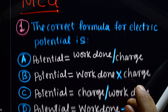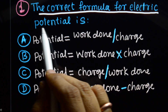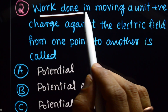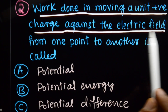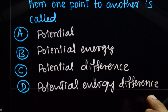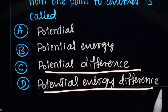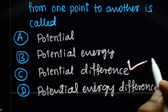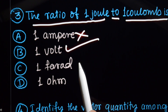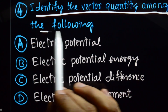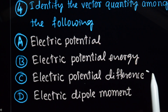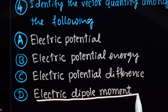Now MCQs. The correct formula for electric potential is: potential equals work done divided by charge. Work done in moving a unit positive charge against the electric field from one point to another is called potential difference. The ratio of 1 joule to 1 coulomb is 1 volt. Among the following, identify the vector quantity: electric potential, electric potential energy, and electric potential difference are all scalar. The electric dipole moment is a vector quantity.